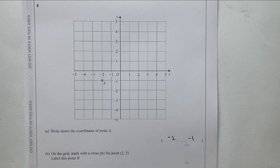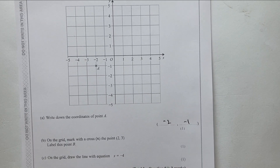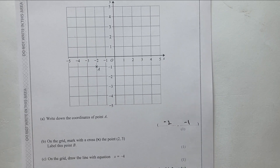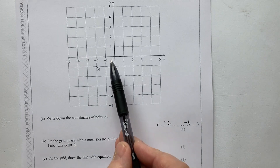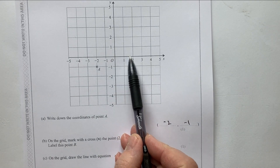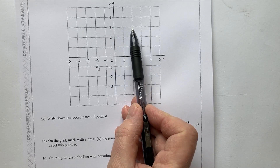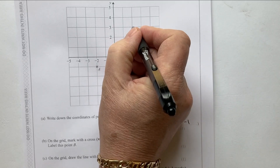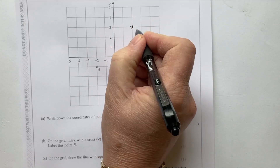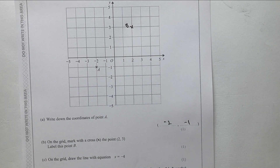Next, mark with a cross the point (2, 3). Again, we go along the corridor and up the stairs — it's this point here. I'll label that point B.